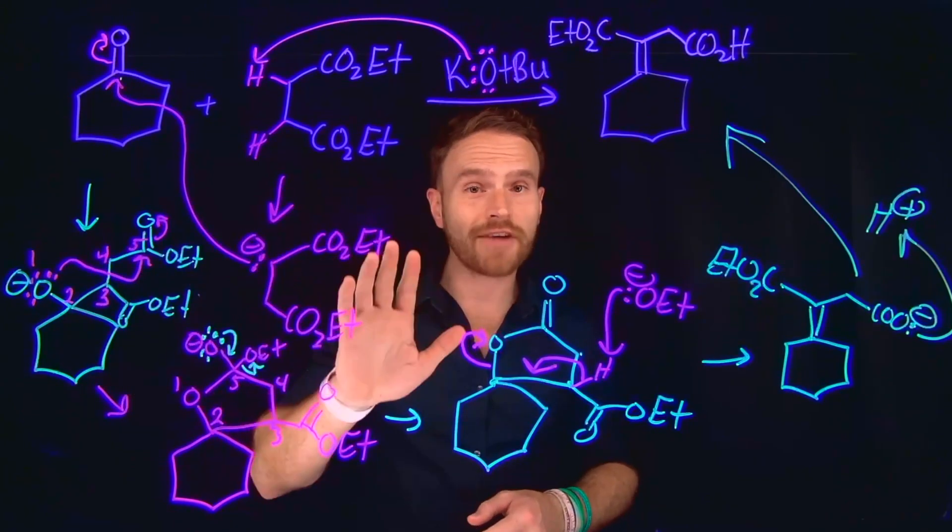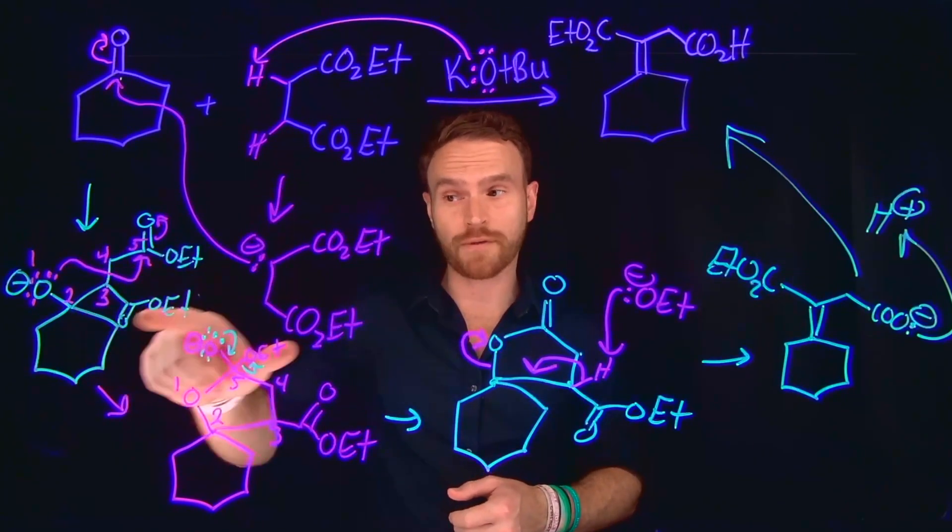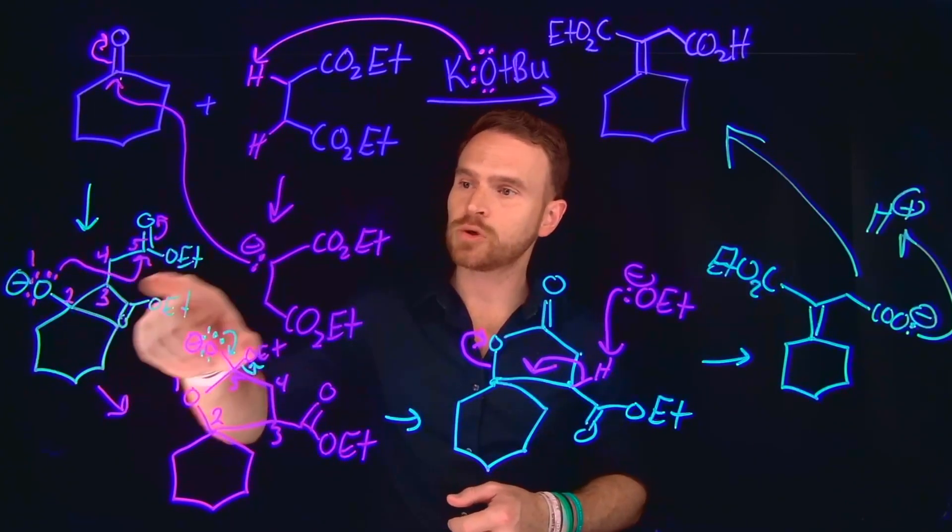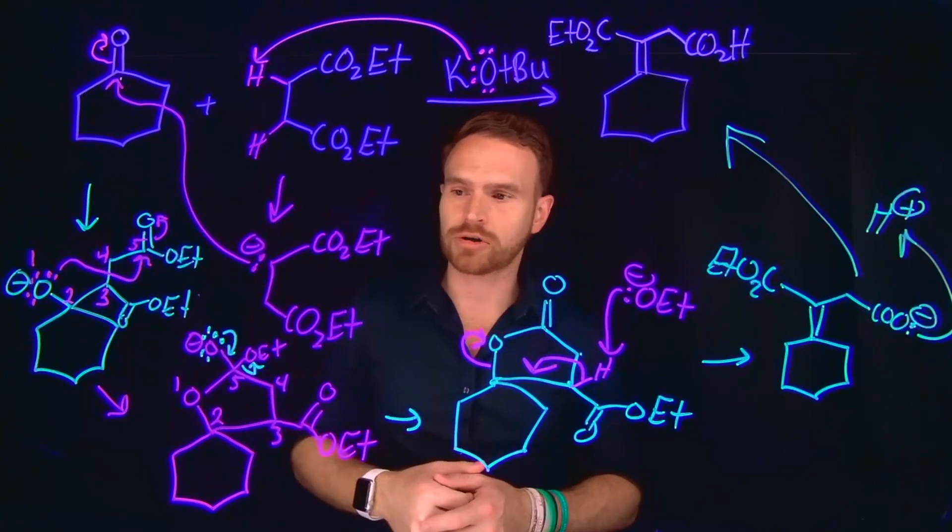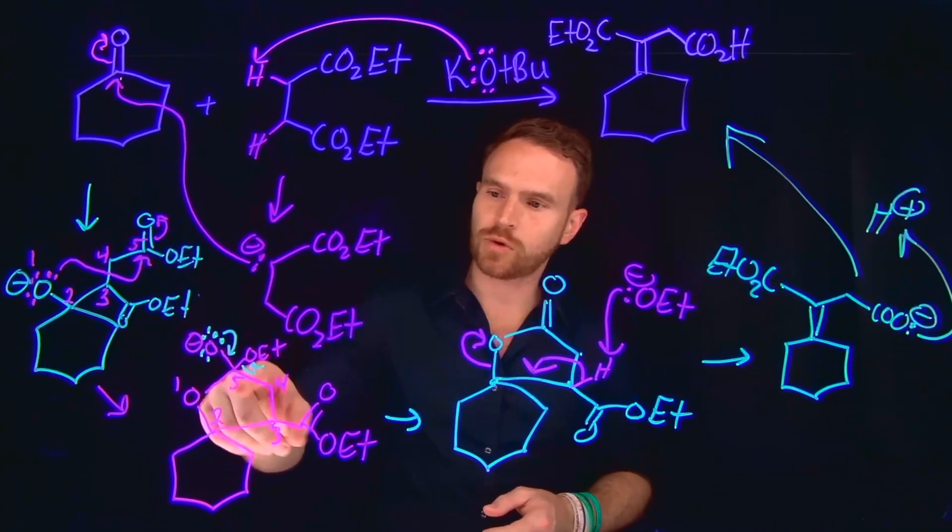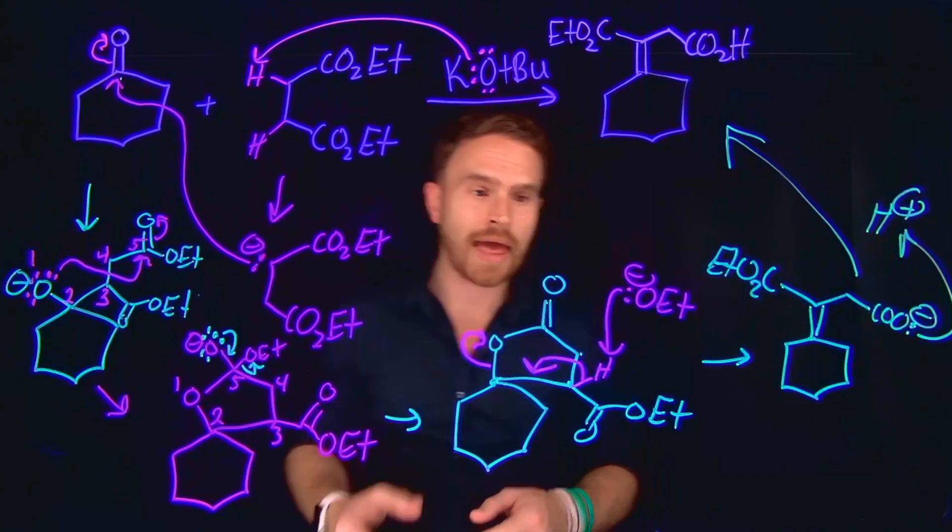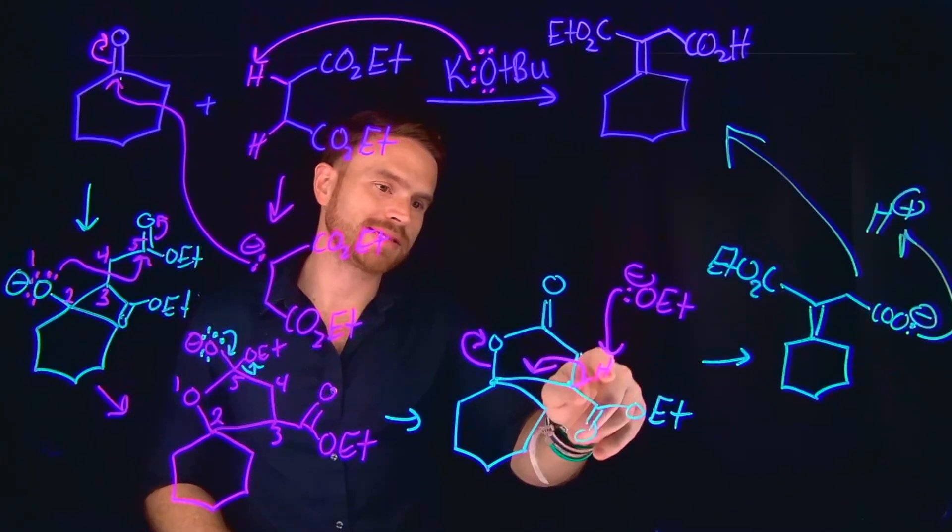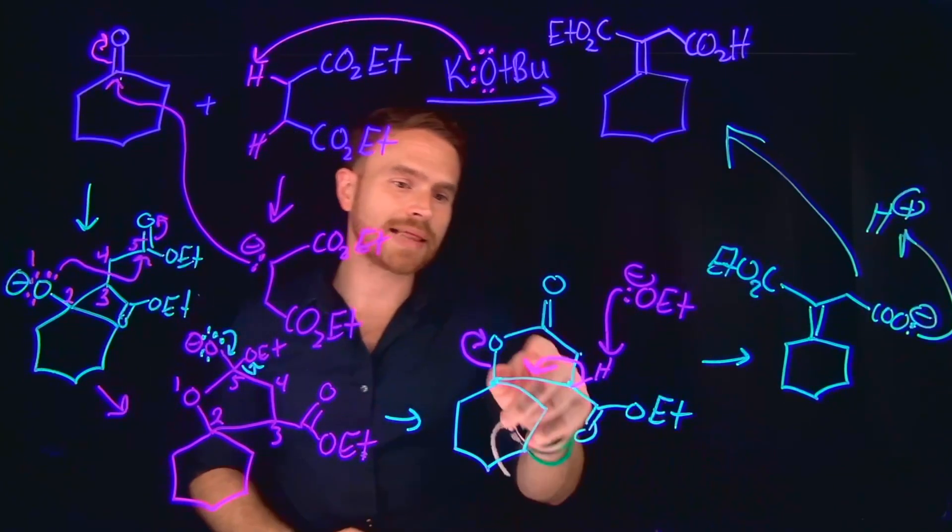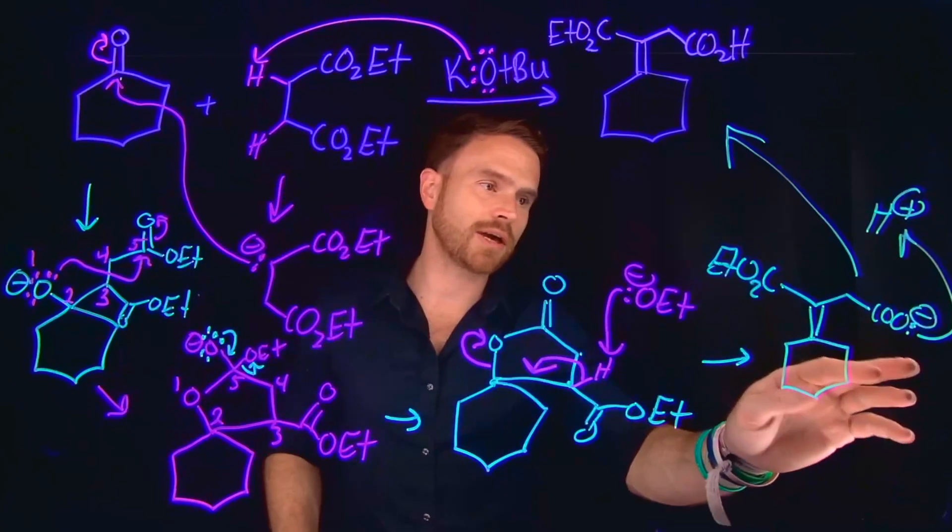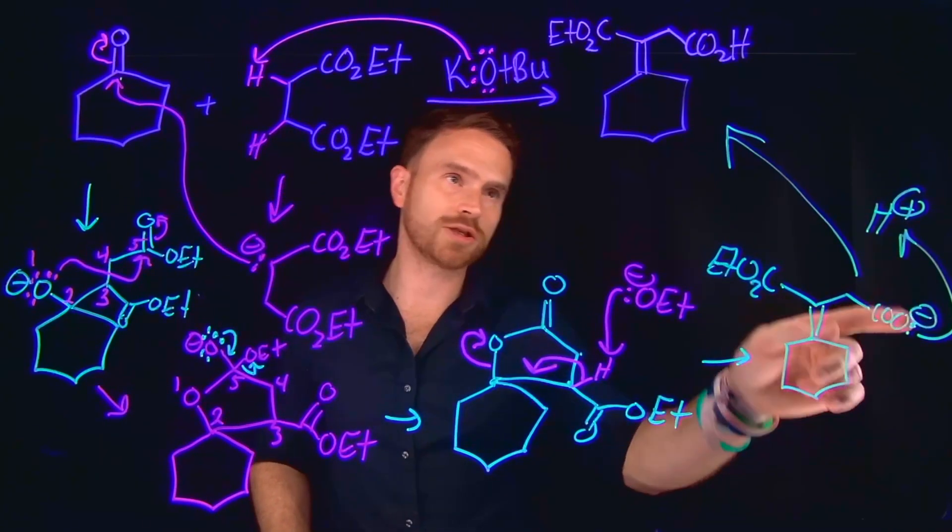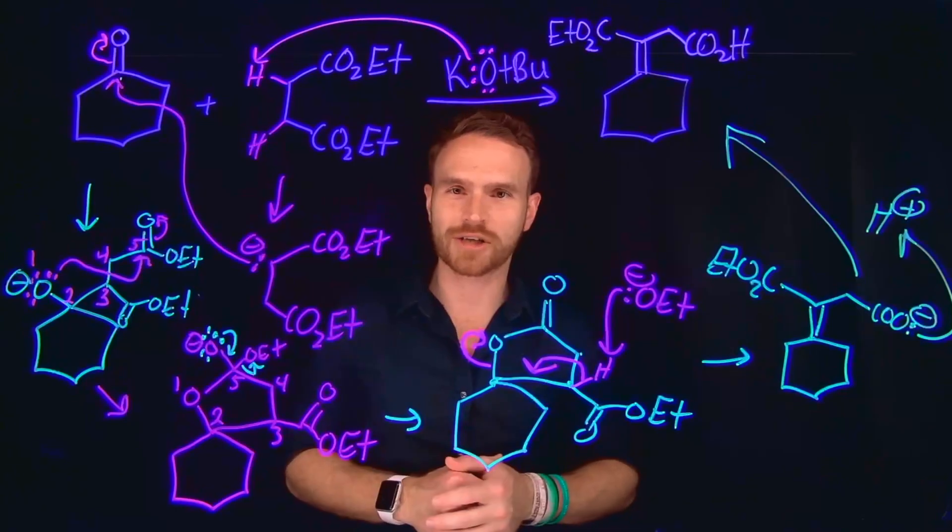Subsequently, we can do a five-membered ring formation as opposed to the four-membered ring formation to generate a new negatively charged oxygen where these electrons will come down kick off an alkoxide, and then that alkoxide can come back and deprotonate another alpha-carbon hydrogen, allowing us to open up that ring, giving us this carboxylate, which later gets protonated to form that carboxylic acid.